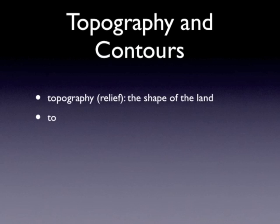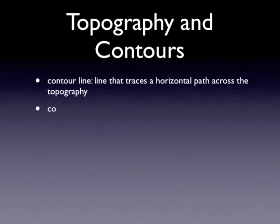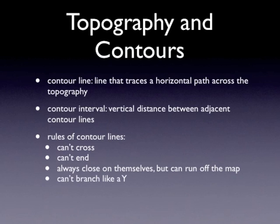A few notes — pause this to take them down. Topography, or relief, is the shape of the land. A topographic map is a map that shows topography with contour lines. A shaded relief map shows topography with shading. Contour line: a line that traces a horizontal path across the topography. Contour interval: the vertical distance between adjacent contour lines. And the rules of contour lines that you'll be practicing with some models in the classroom.